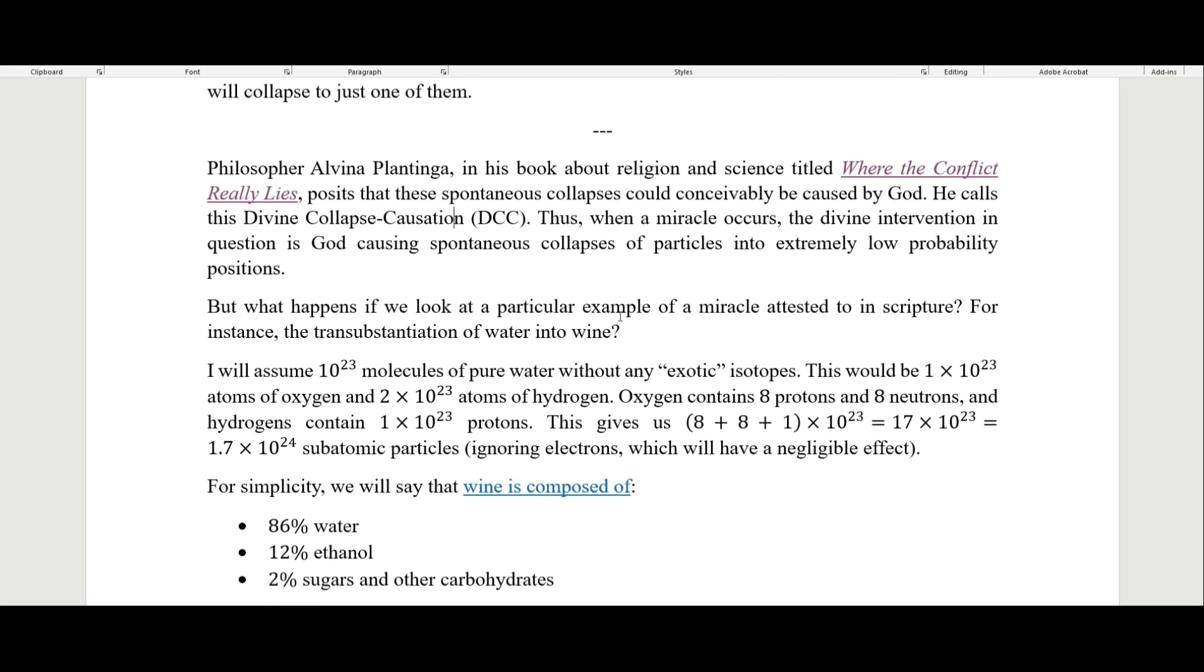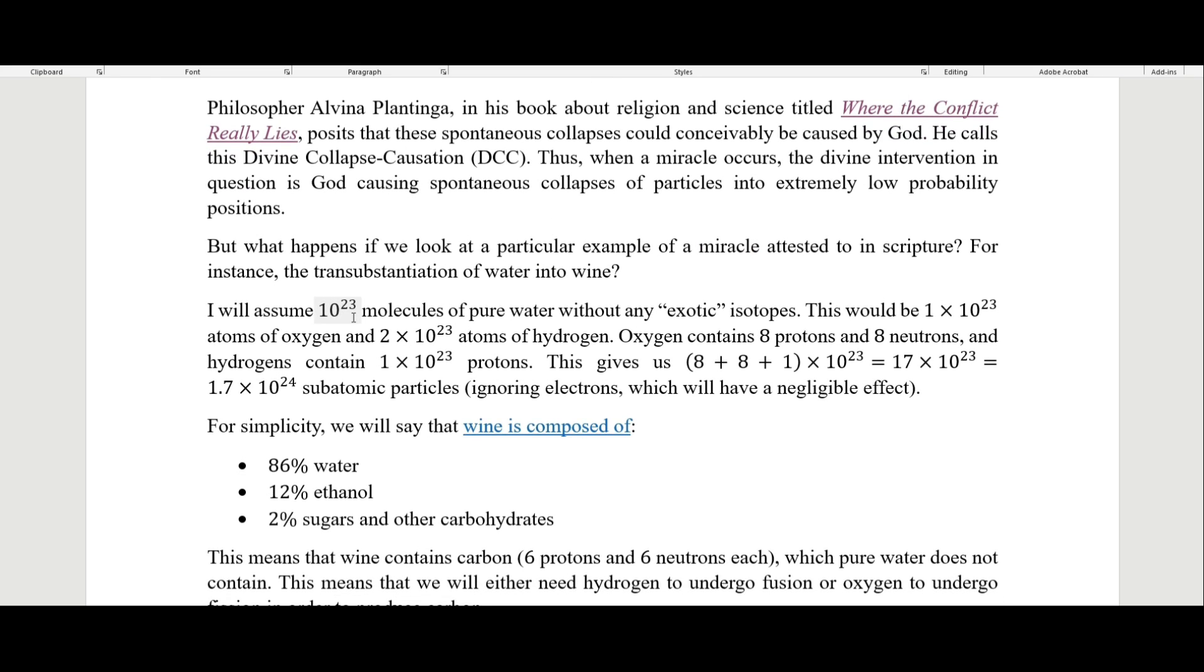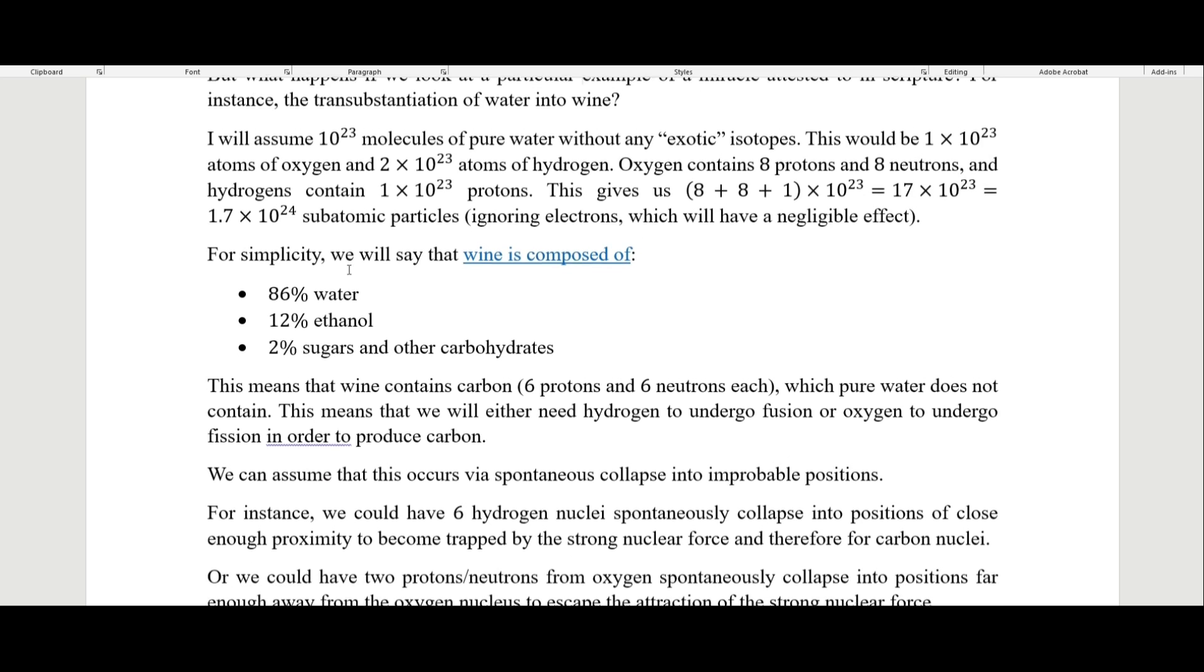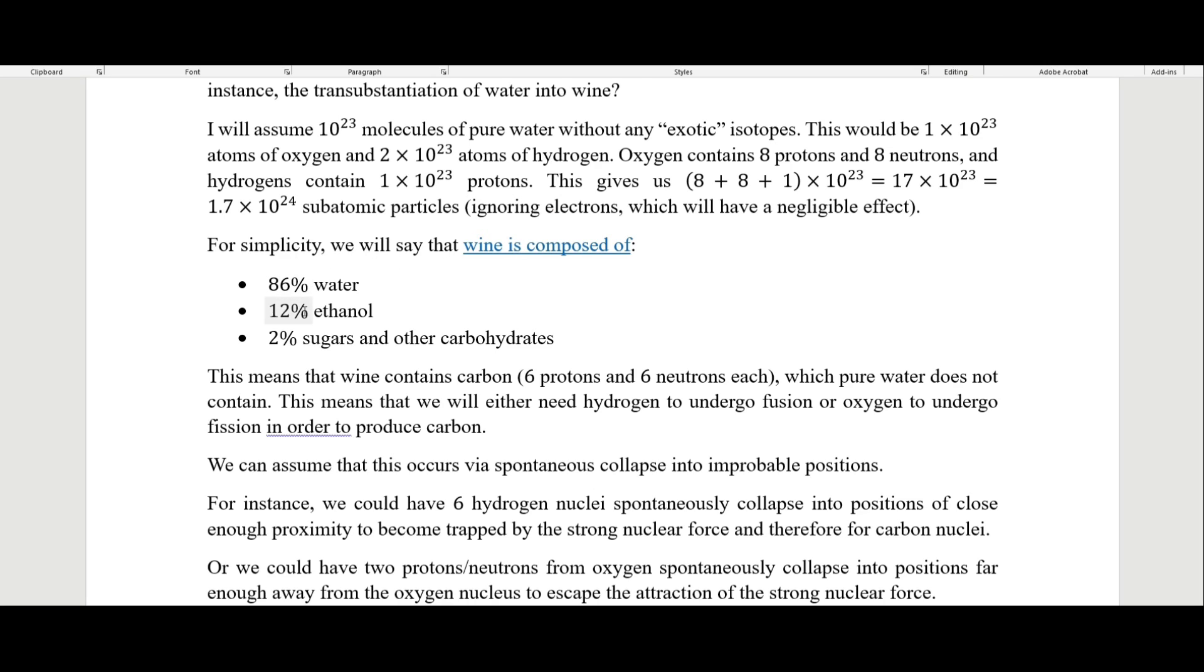But what happens if we look at a particular example, the transubstantiation of water into wine? I'll assume 10^23 molecules of pure water without any exotic isotopes. This would come out to about 1.7×10^24 subatomic particles, ignoring electrons. For simplicity, I'll say that wine is composed of 86% water, 12% ethanol, and 2% of sugars and other carbohydrates. This means that wine contains carbon, which is 6 protons and 6 neutrons, which pure water does not contain.